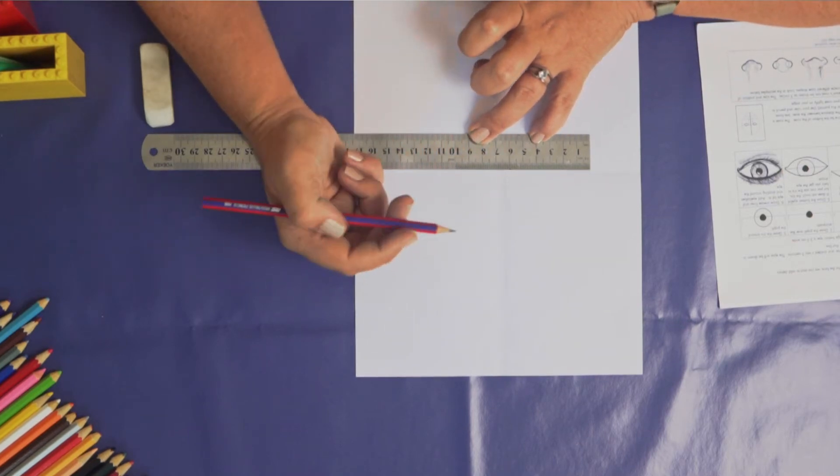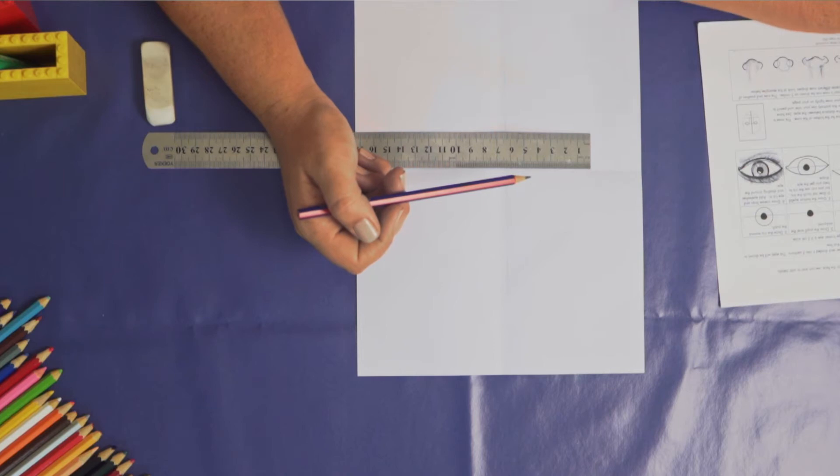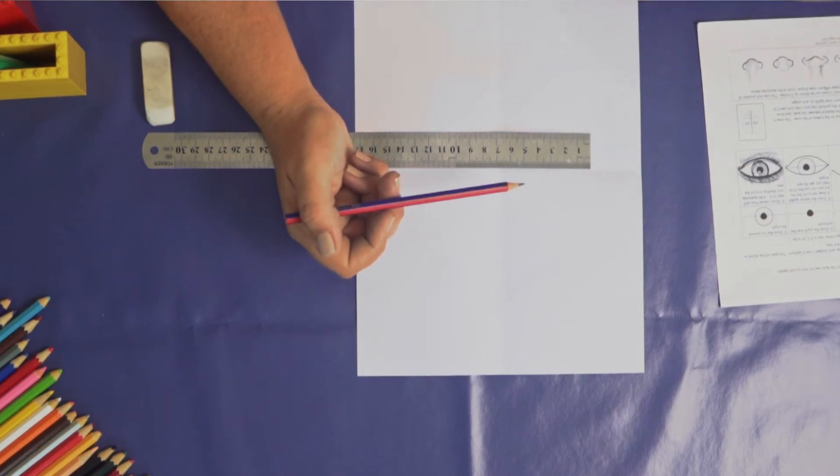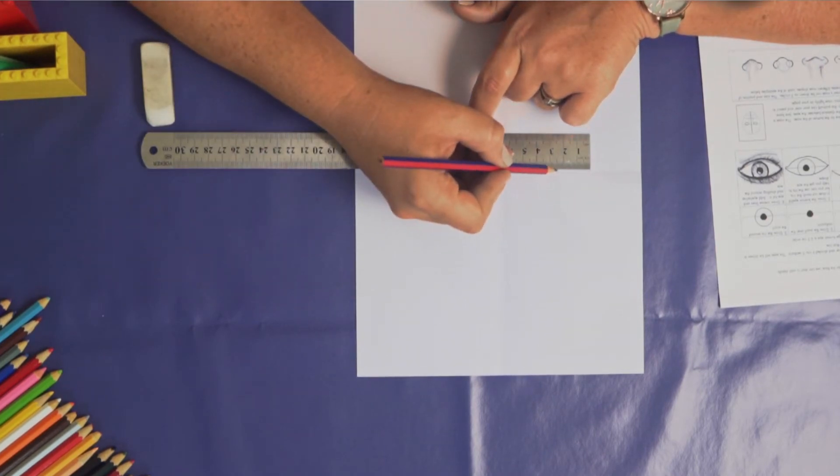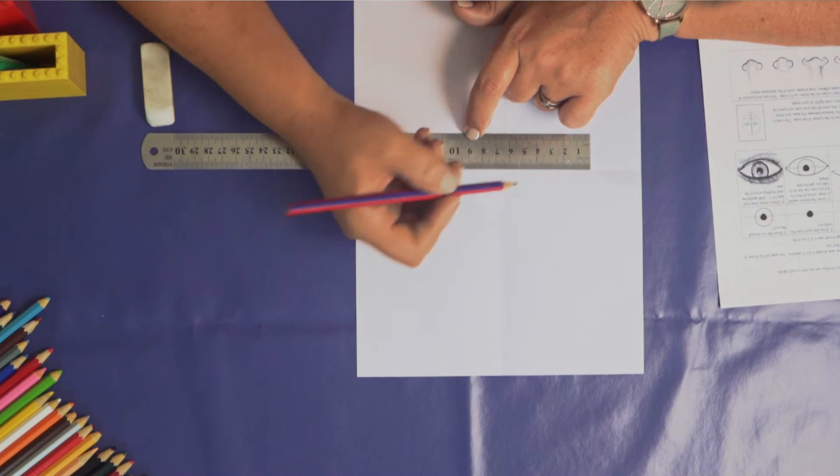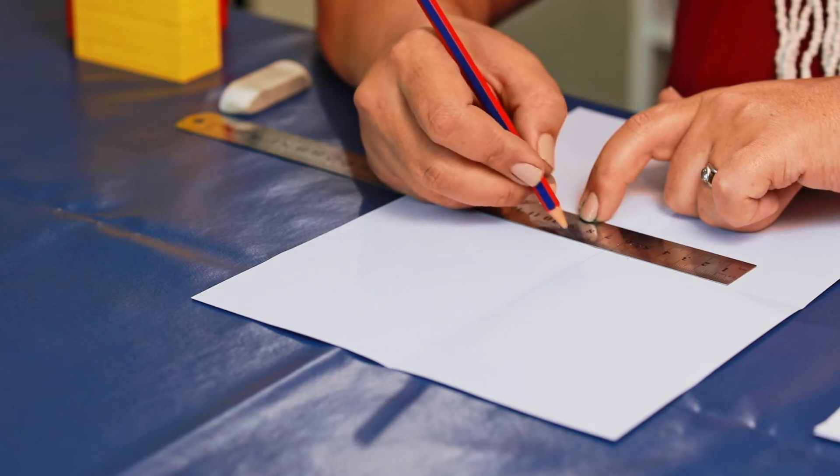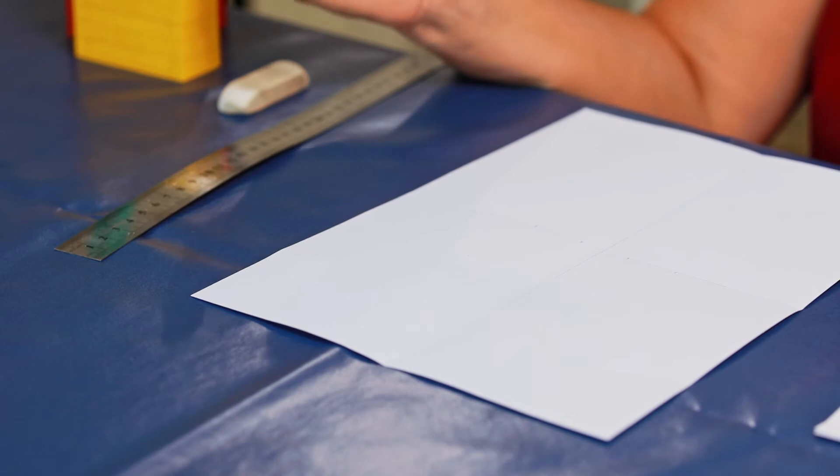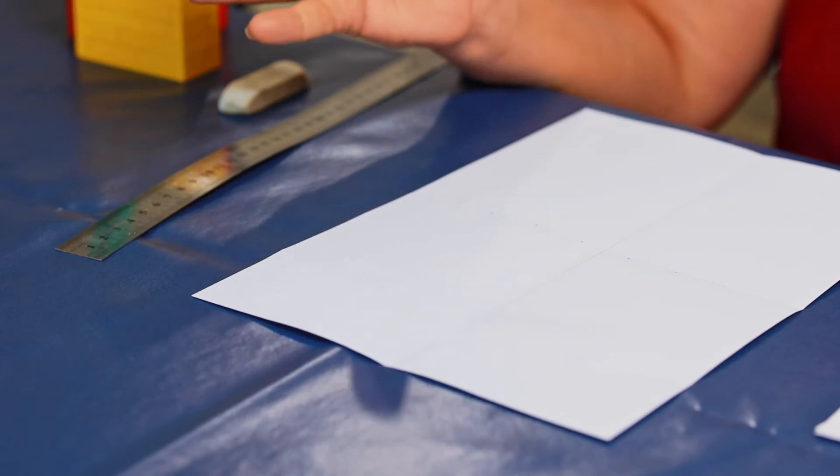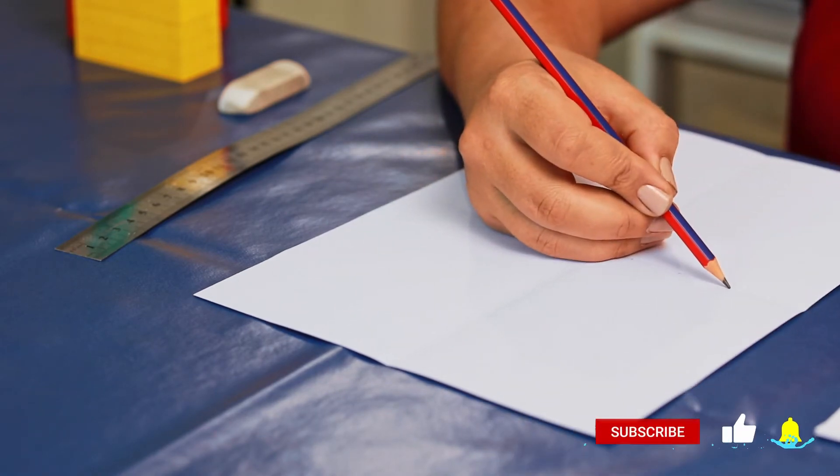Right. Now this line that we've made 12 and a half centimeters or about 5 inches, we're going to divide into 5 equal parts. So if you're doing inches that's really easy, just one inch each. If you've done centimeters, we would do two and a half centimeter increments. Now the reason that we've done this is that your eye can fit across your face five times and the average eye is two and a half centimeters or an inch wide. So this line that we've just drawn here is actually going to be our eye line.